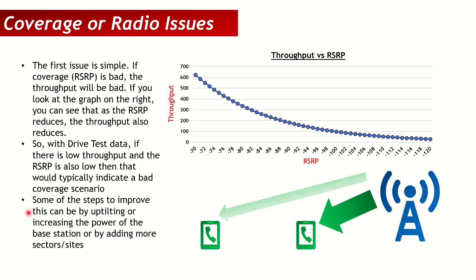The first one — a coverage or radio issue — is pretty simple. If you look at any log file with throughput on the Y-axis and RSRP on the X-axis (RSRP is used for both LTE and 5G), you will see that as the user's RSRP goes down, meaning the user is in bad coverage, the throughput keeps going down. A user near the site gets better throughput, while a user far away or in deep indoor has lower RSRP and lower throughput.